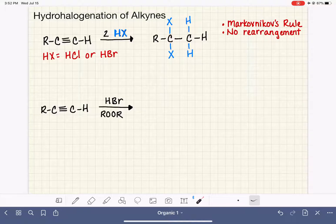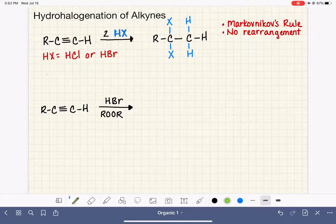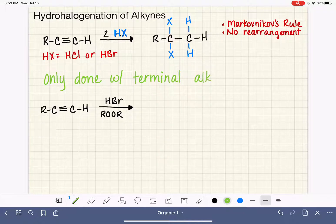One thing to note about the hydrohalogenation of an alkyne is that it is typically only done with terminal alkynes. It is not impossible to do this with an internal alkyne, but it's not useful to do it with an internal alkyne. With a terminal alkyne, remember a terminal alkyne is one where the carbon-carbon triple bond is at the end of a chain.